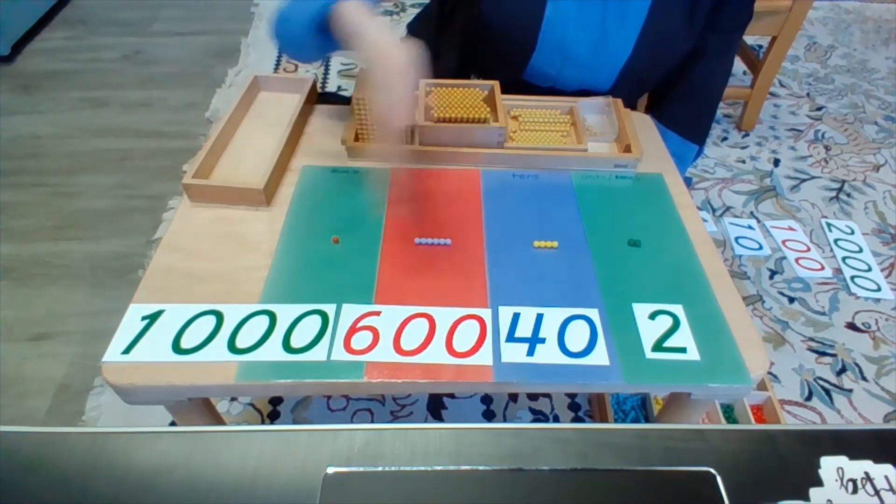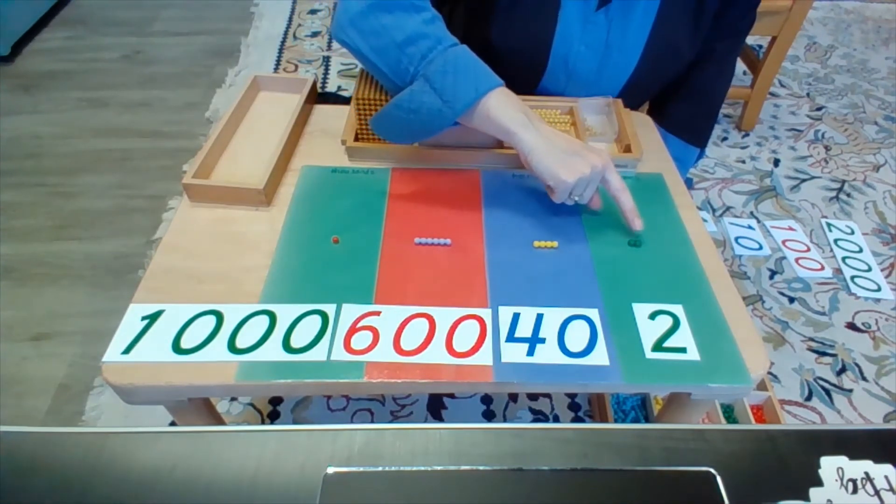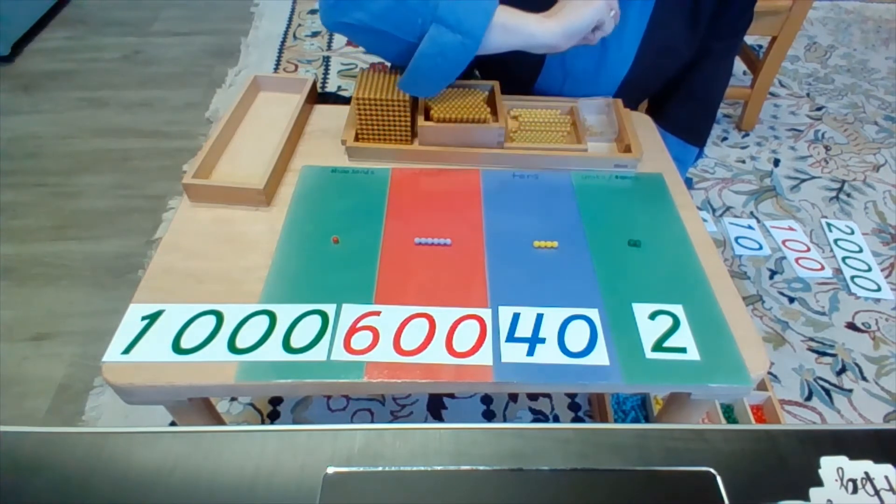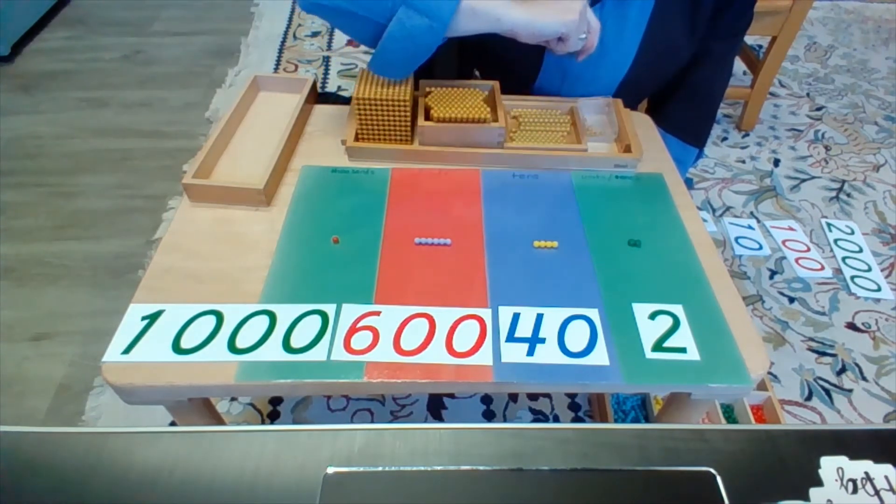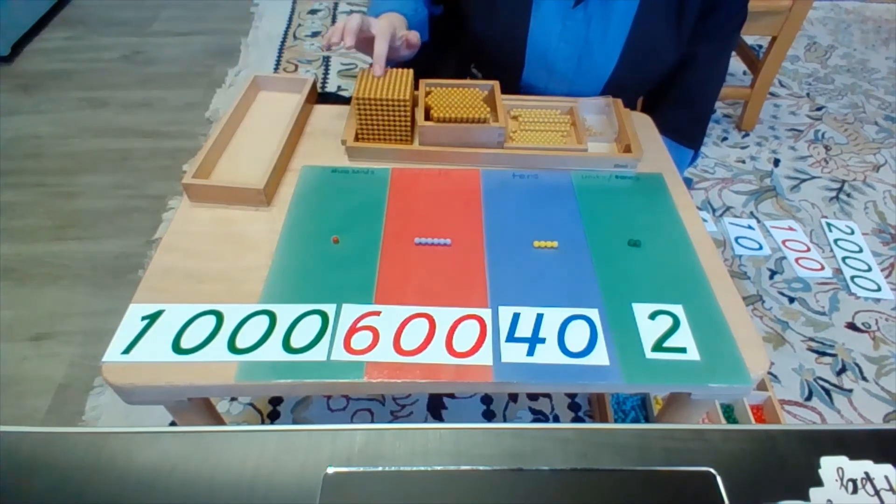So this is another way that I can represent my numbers using place value. This shows me that there are 2 units, 4 tens, 6 hundreds, and 1,000.